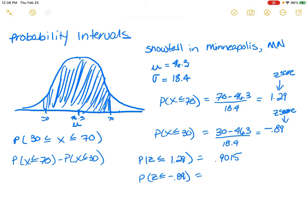And the probability that Z is less than or equal to negative 0.89, and again, the tables for this are in the very back of your book in the appendices, but this is equal to 0.1867.